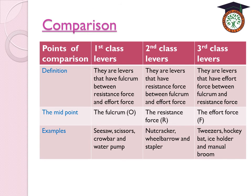Let's compare the three classes of levers. First-class levers have the fulcrum between resistance force and effort force; their midpoint is the fulcrum — examples: seesaw, scissors, crowbar, water pump. Second-class levers have resistance force between fulcrum and effort force; midpoint is resistance force — examples: nutcracker, wheelbarrow, stapler. Third-class levers have effort force between fulcrum and resistance force; midpoint is effort force — examples: tweezers, hockey bat, ice holder, sweet holder, manual broom.